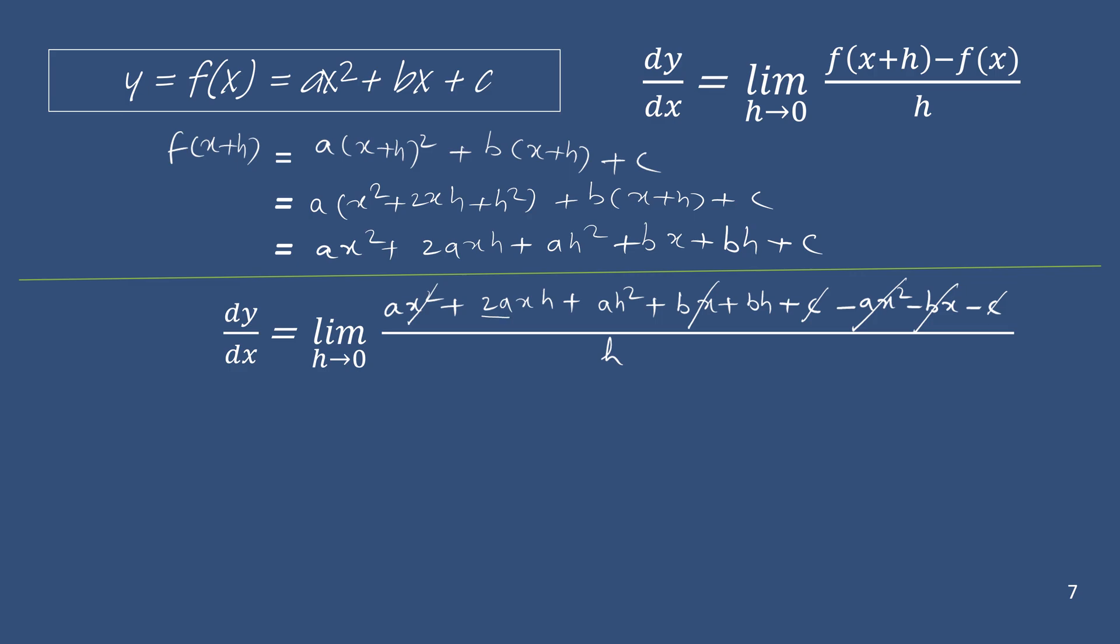Now you will notice that the remaining three terms all have h common. So we can take h common. Now this h in the numerator cancels this h in the denominator.